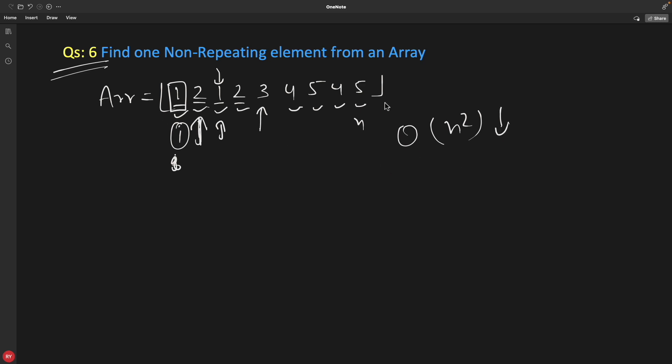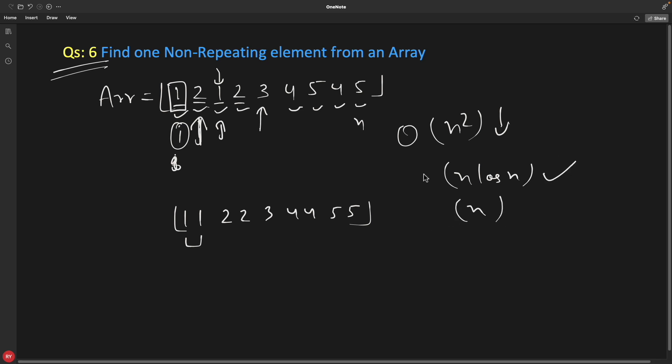What else we can do? We can sort these numbers. So if you sort it, it will be like one, one, two, two, three, four, four, and five, five. Now you can check in the pairs. So it's like n log n for sorting and then n for traversing again, so we have n log n complexity which is still not that great.